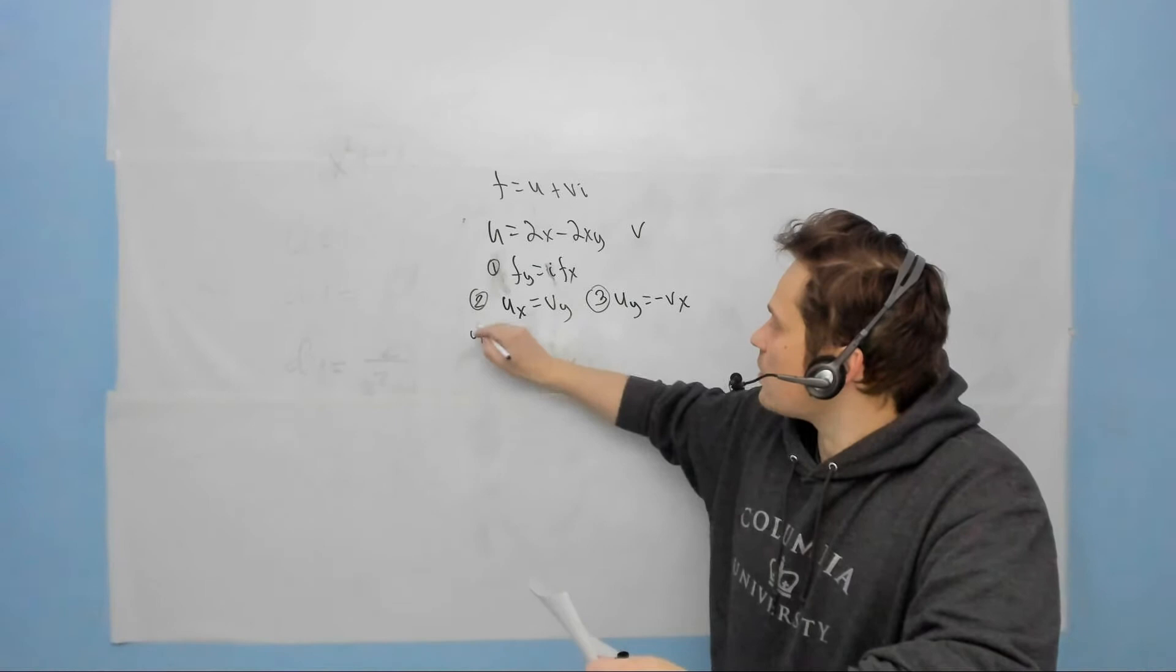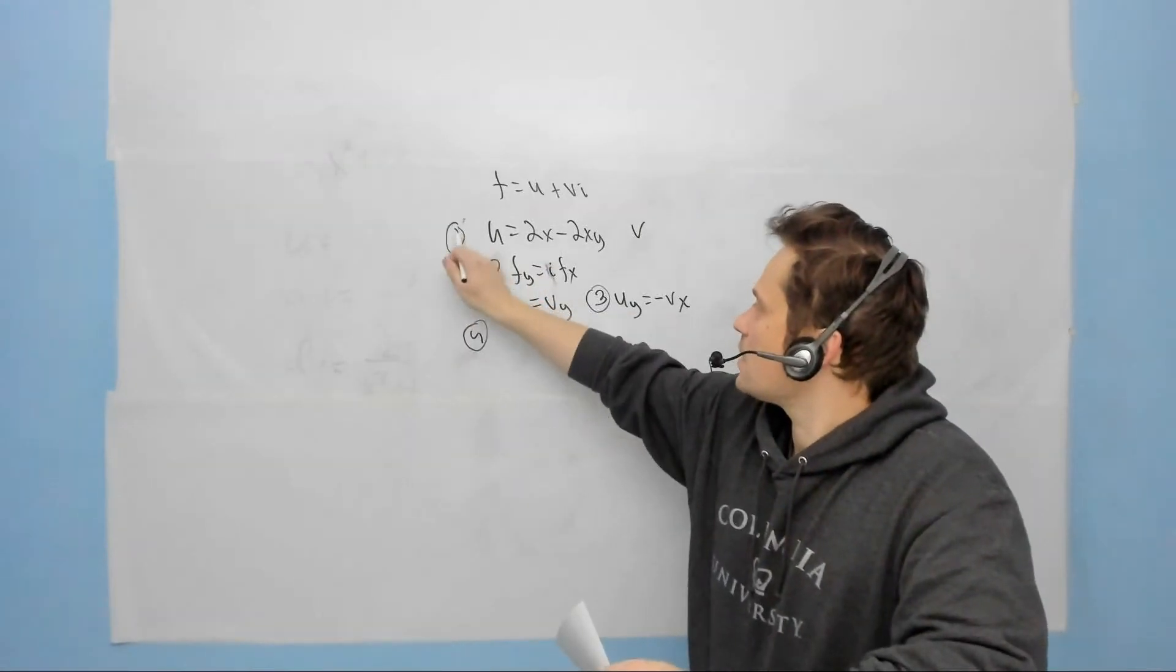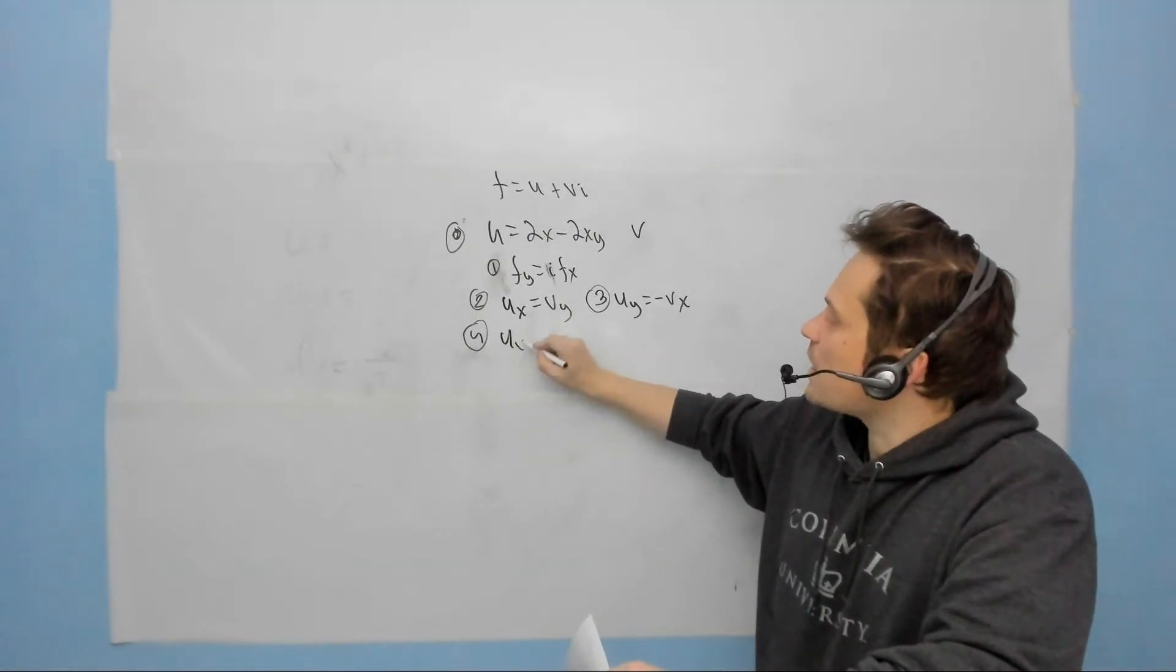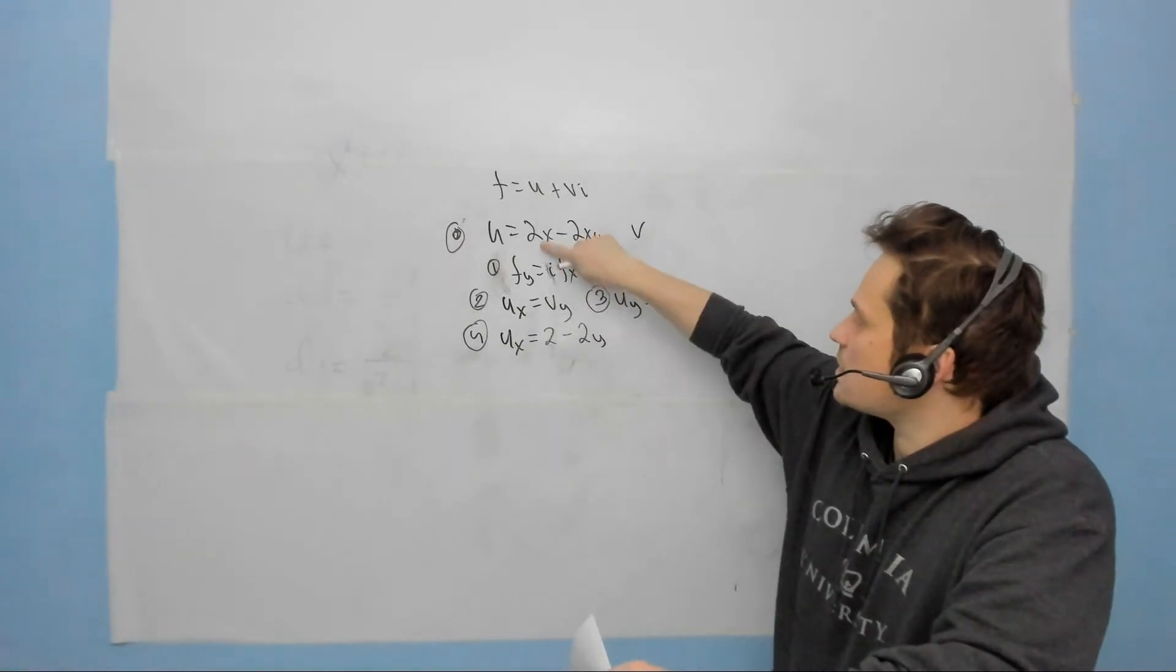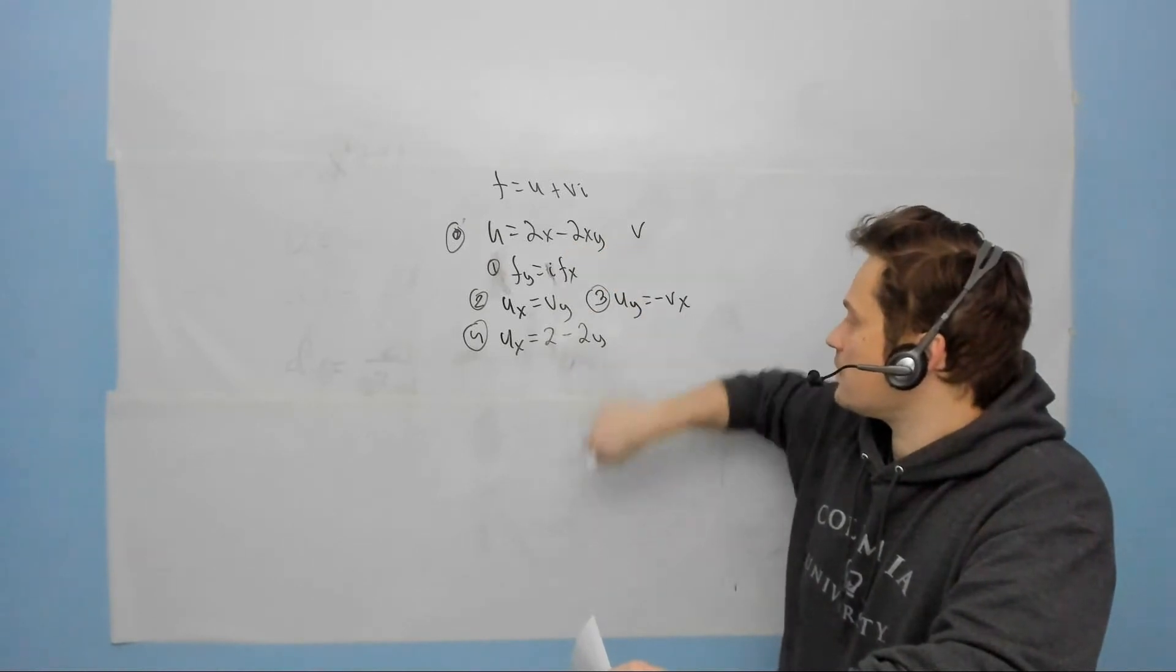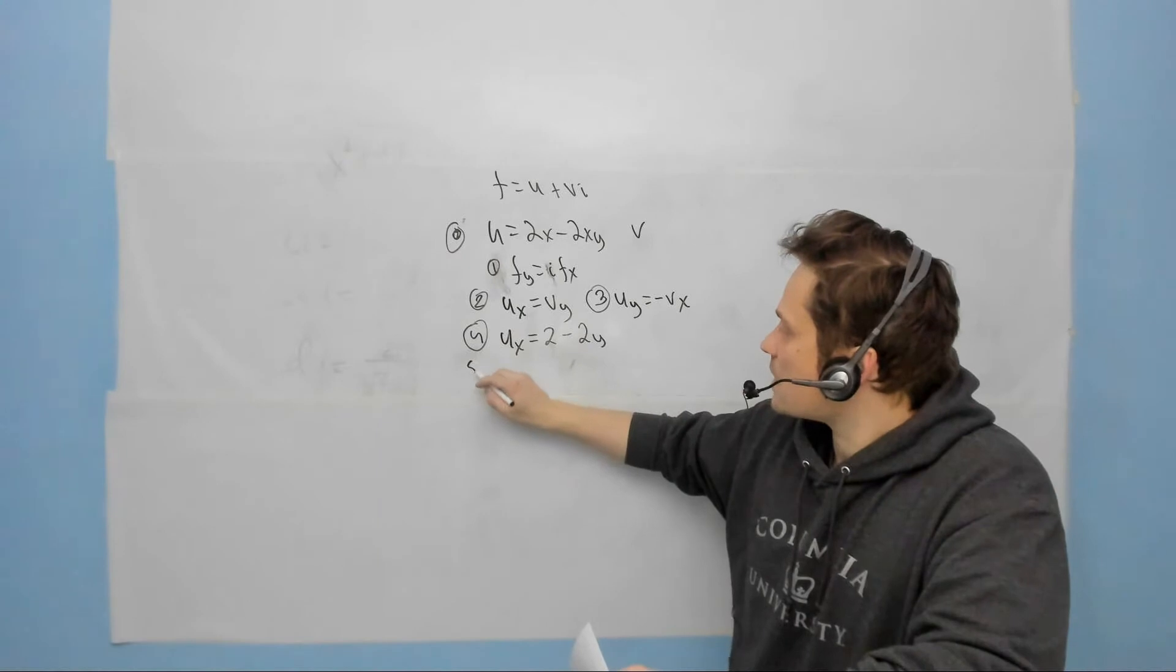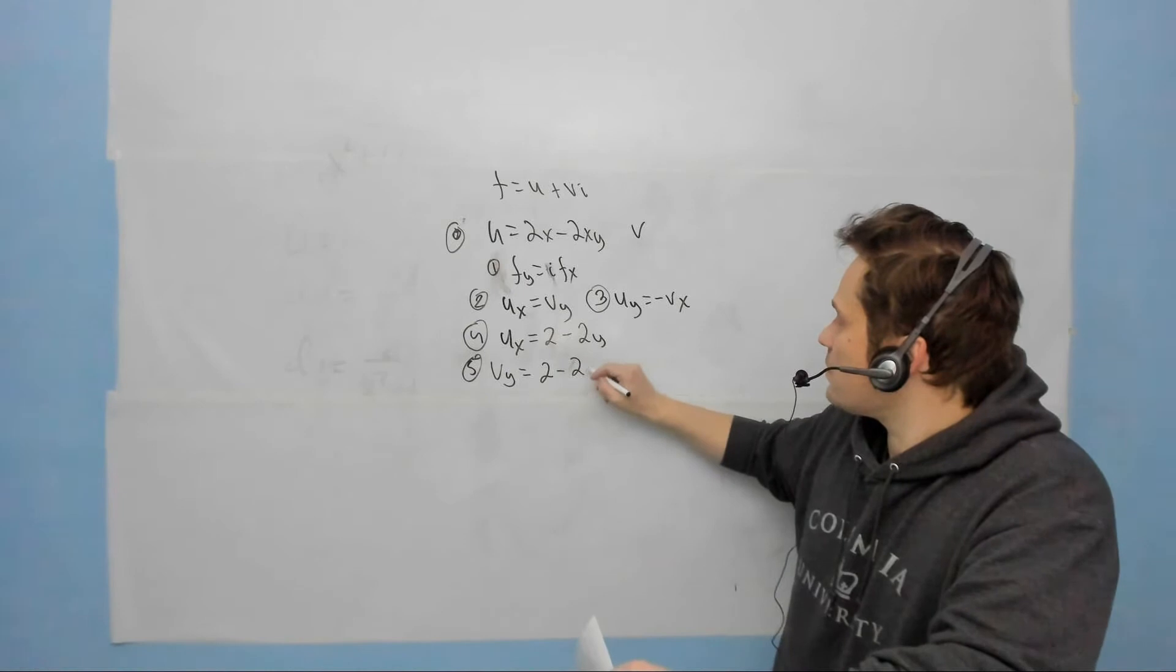So at step 4, what I'm going to do is take the given equation u, call this step 0, and differentiate that with respect to x. So I'm going to have that u sub x is equal to 2 minus 2y. So 2x differentiated is 2, negative 2xy differentiated is just negative 2y. Now I've got this, and I know this is equal by equation 2 to v sub y. So I can say that v sub y is also equal to 2 minus 2y.